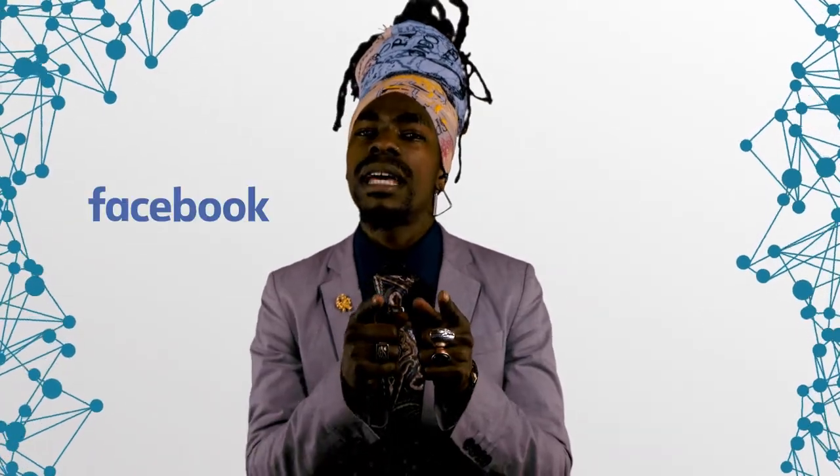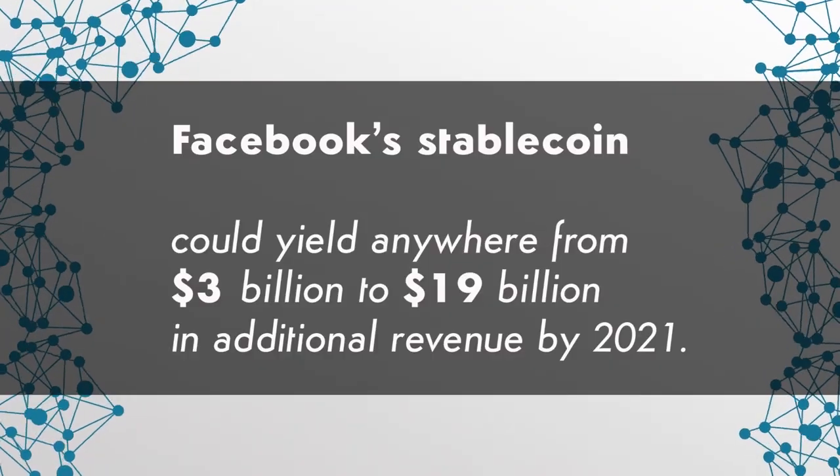A potential major game-changer for the industry could be Facebook, if it launched its long-predicted fiat-backed stablecoin. The tech giant not only has the capital to fully collateralize its stablecoin, but also the leverage to push its widespread adoption. One possible use case is paying content creators for ads with the new token, or even reimbursing users for watching ads. According to Barclays analyst Ross Chandler, the stablecoin could yield anywhere from $3 billion to $19 billion in additional revenue by 2021.